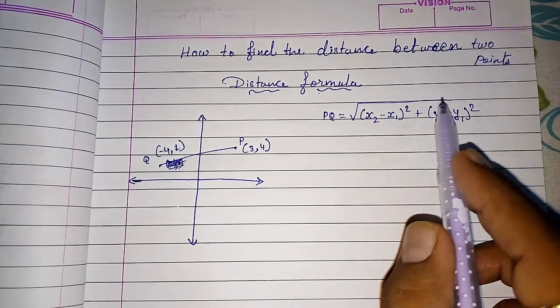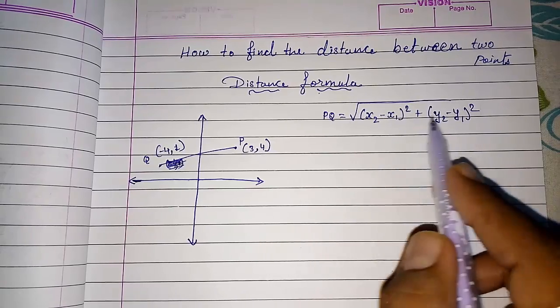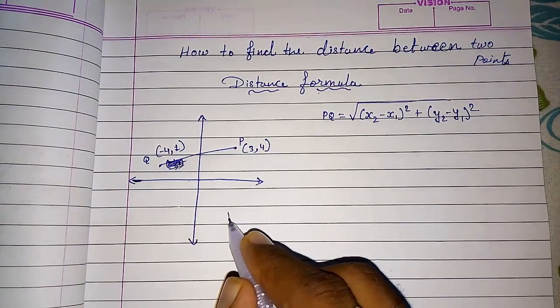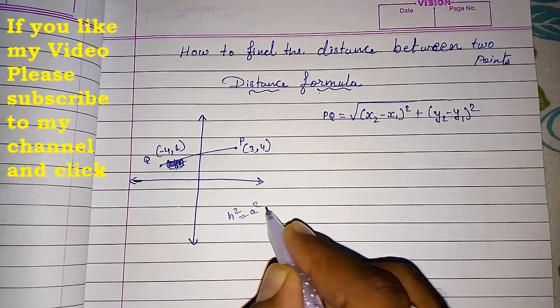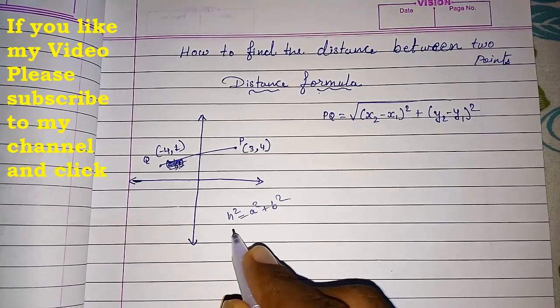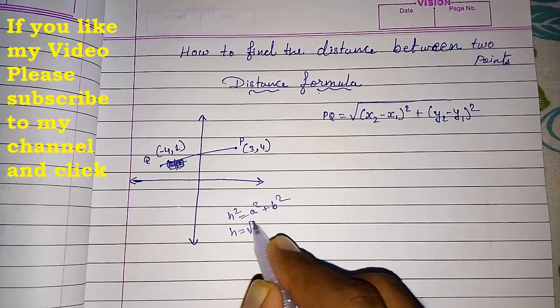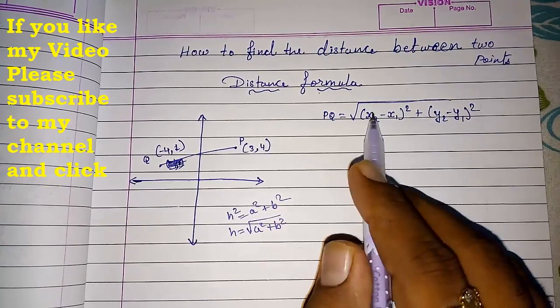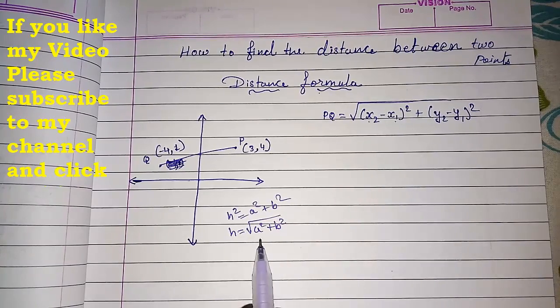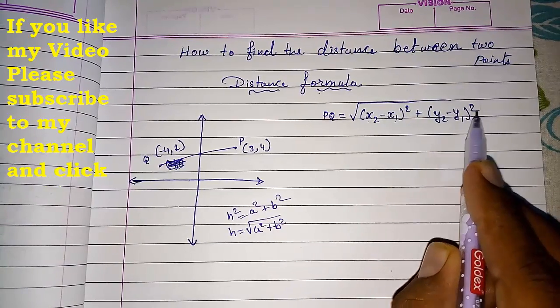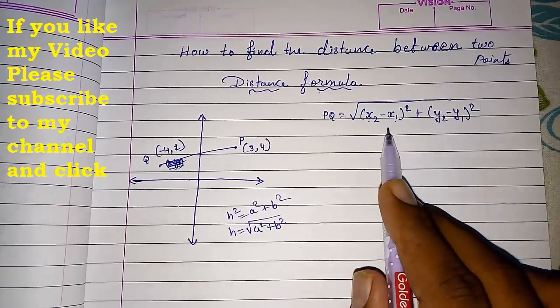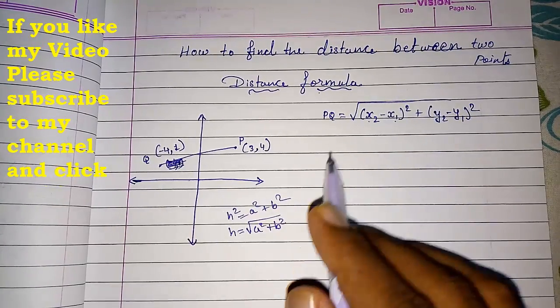Actually, it is derived from Pythagoras. You know what Pythagoras is? I am doing it here. Pythagoras is H² = A² + B². If I want to find H, then it will be √(A² + B²). X2 minus X1 gives you A, and Y2 minus Y1 will give you B. So this derivation is from Pythagoras only, but I am not going to explain that.